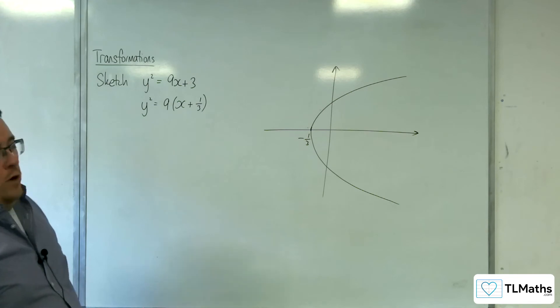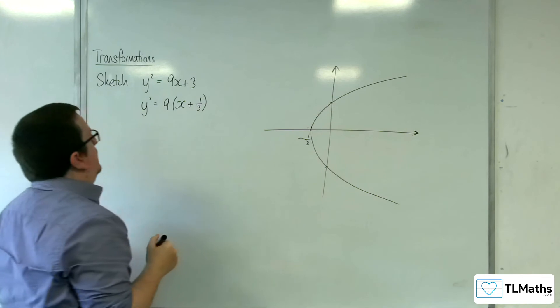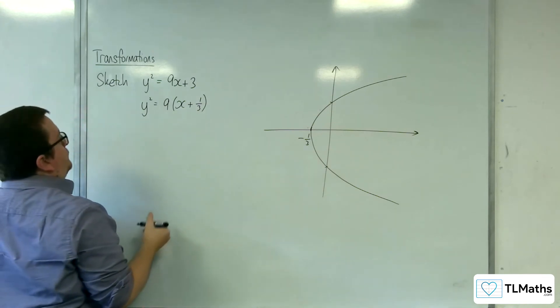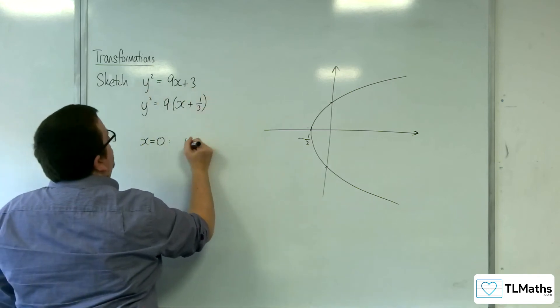Now I can work out where it crosses the y axis. Makes sense to do that. When x is 0, I would have y squared equals 3.